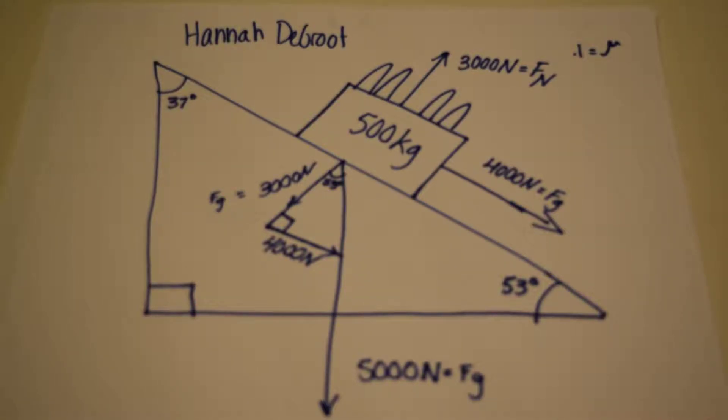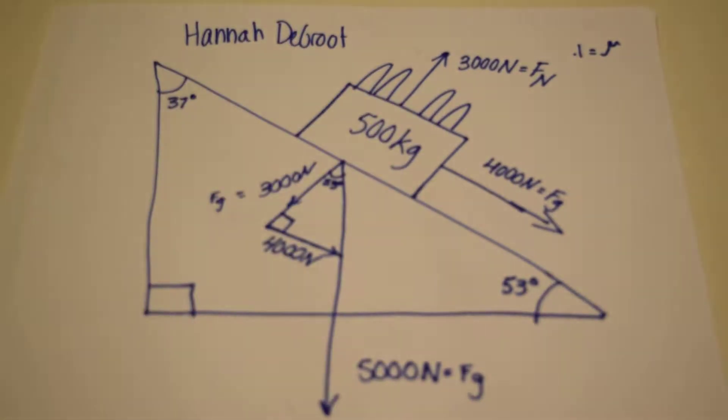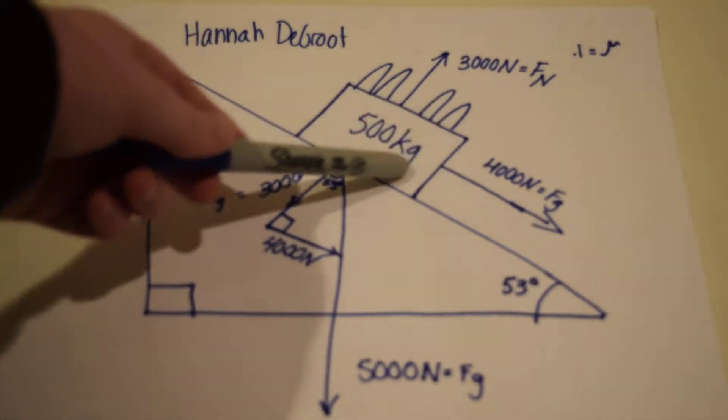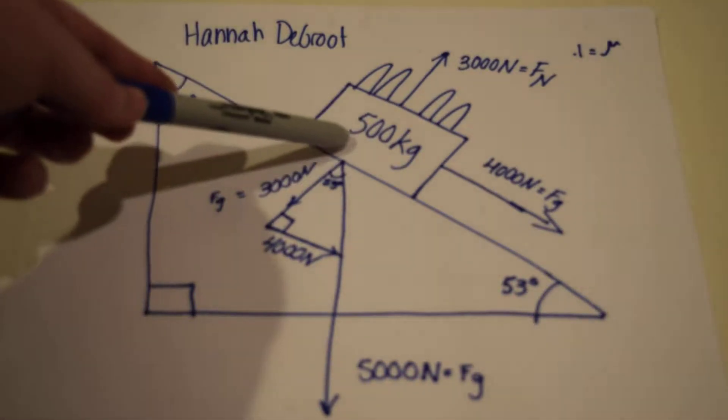So right now we have four people riding in a roller coaster and all together they weigh about 200 kilograms, and then the section that they are riding in itself weighs about 300 to give us a total of 500 kilograms.